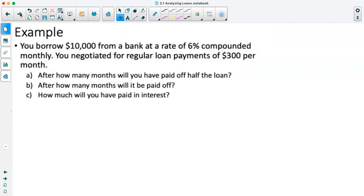For example, you borrow $10,000 from a bank at a rate of 6% compounded monthly. You negotiate for regular loan payments of $300 per month. We want to figure out three different things: after how many months will you have paid off half the loan, after how many months will it be paid off entirely, and how much will we have paid in interest? For the first two questions, we're actually solving for N, our number of payments.